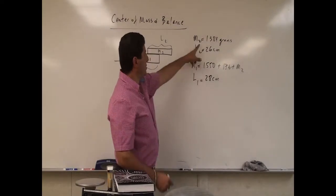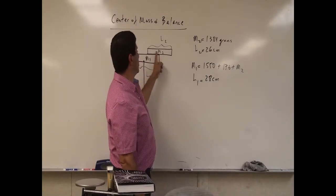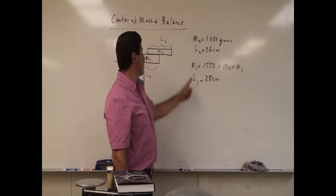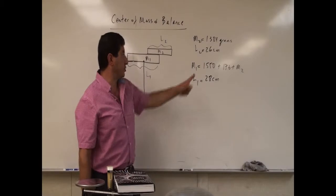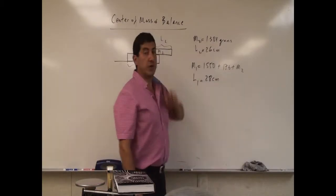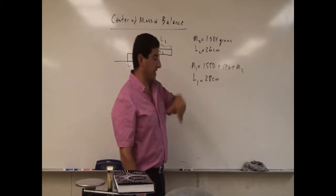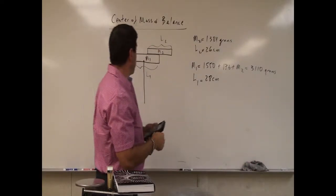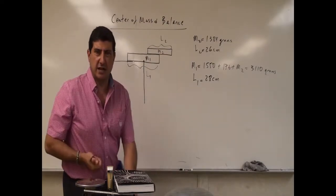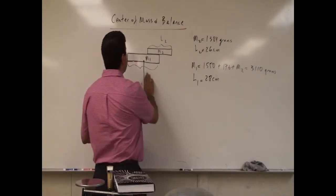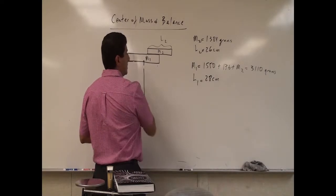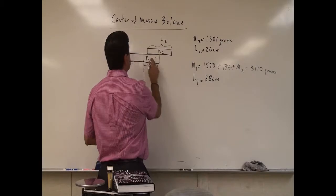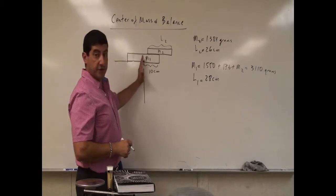These are the conclusions from the measurements. The lighter book — which I'll put on top — is 1,284 grams with a length of 26 centimeters. The bottom book is 1,550 plus 76 plus the top book weight, so we have to add all that; its length is 28 centimeters. I'll put 10 centimeters of the bottom book out over the edge.